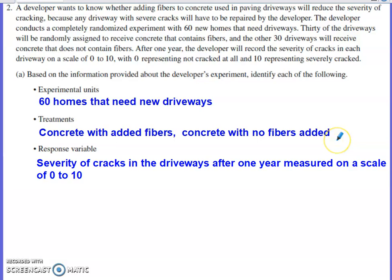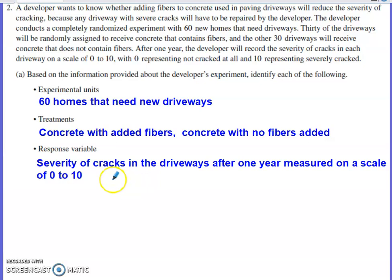As far as the treatments go, we have 30 of the homes that are going to get concrete with added fibers, and the other 30 are going to get concrete with no added fibers. The variable we're trying to measure — the response variable — is how severe the cracking of the driveways is after one year, measured on a scale of 0 to 10.